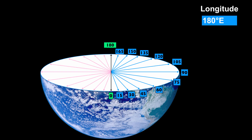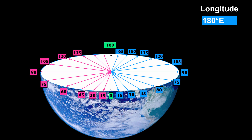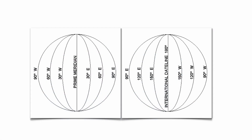We do the exact same thing heading west to a maximum of 180 as well. 180 plus 180 gives us 360 degrees, which is the degree value of our planet because we live on a spherical planet. You can see the side of the Earth with the prime meridian and the back side with the international date line. Your longitude lines intersect at the North Pole and the South Pole, almost like the lines on a basketball or on a pumpkin.